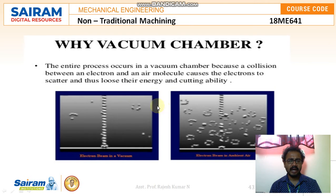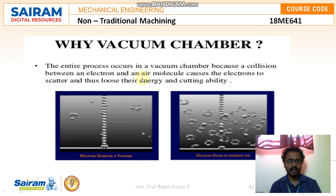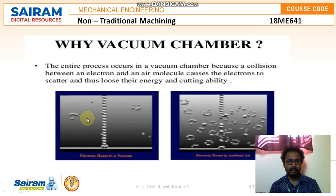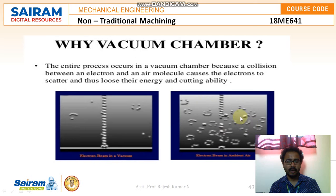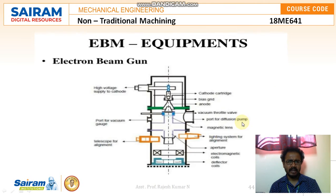The entire electron beam machining process occurs in a vacuum chamber because collision between an electron and air molecules causes the electrons to scatter and thus lose their energy and cutting ability. You can see that the electron beam in a vacuum moves straight in the intended direction, whereas when the electron beam is in the presence of air, the electrons collide with air molecules and scatter significantly.